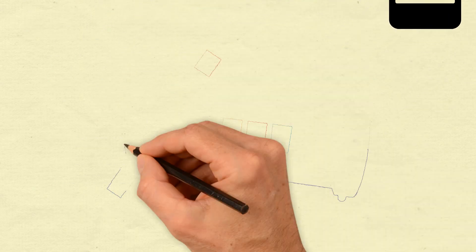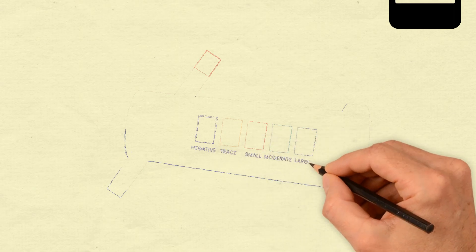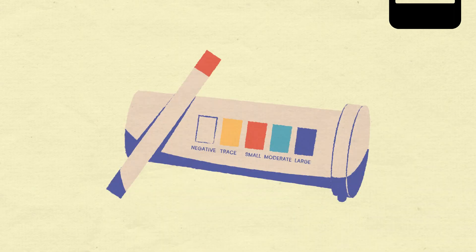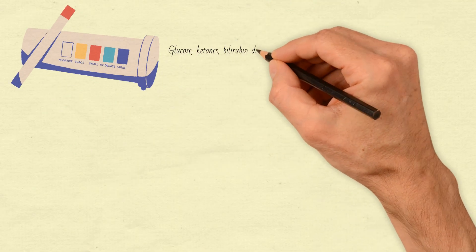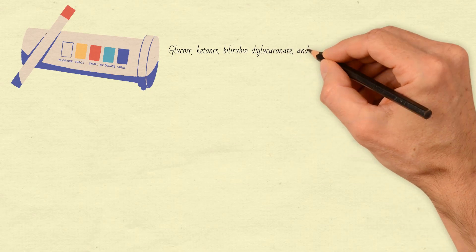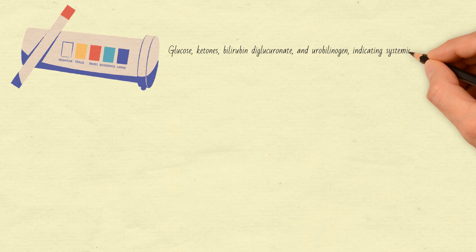One of the most common methods for assessing urine is reagent strip testing, also known as dipstick testing. These strips are coated with reagents specific to different analytes and can test for single or multiple substances at once. Dipsticks can detect signs of systemic changes or kidney-related issues, such as glucose, ketones, bilirubin diglucurinate, and urobilinogen, indicating systemic health problems.